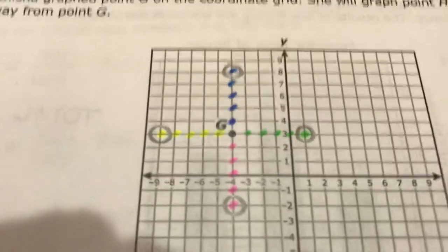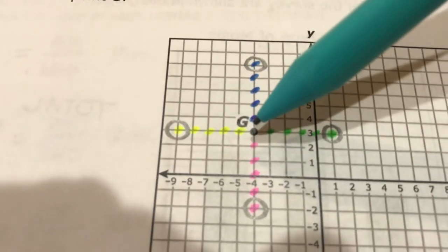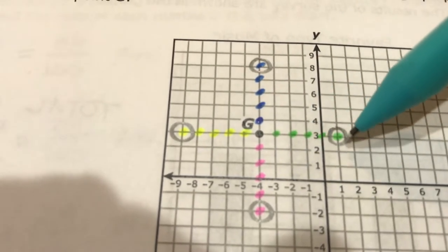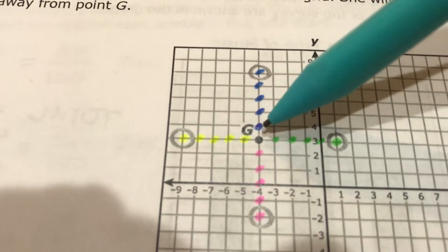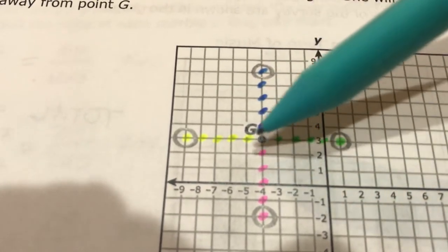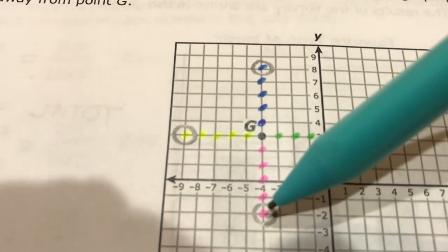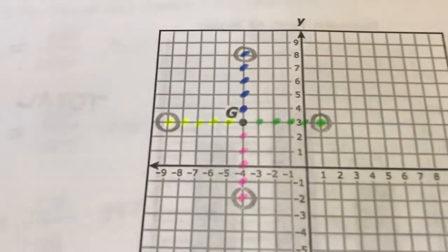But it doesn't tell you which direction away from it. So what I did was started at G and then counted five units away in every direction that you could. So I did the green ones 1, 2, 3, 4, 5 away this direction, and I did five away in this direction, five away in this direction, and five away in this direction because it doesn't tell us what direction.